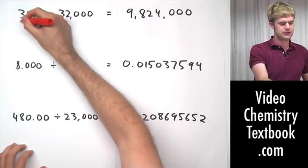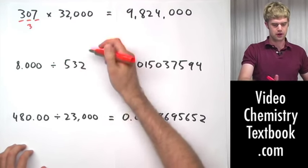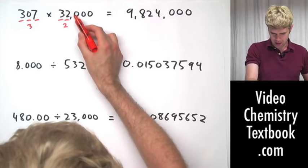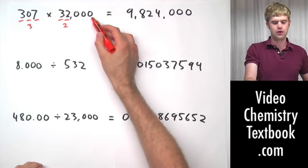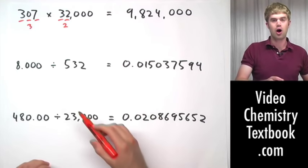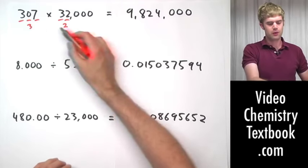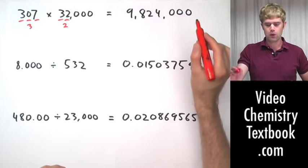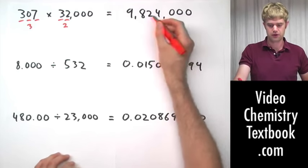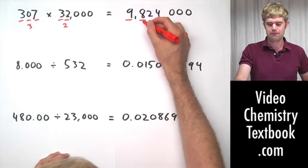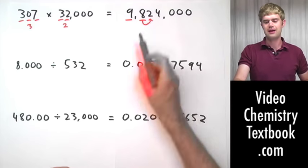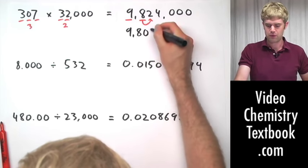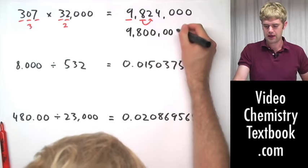307 here has three significant figures because of this sandwiched zero, and 32,000 has two significant figures because zeros to the right of significant figures when the number doesn't have a decimal point are not considered significant. So that means that when we multiply these together, here is the answer that our calculator spits out. We want to round it to two significant figures. So we'll keep the nine, we'll keep the eight, look next door to the eight whether to round up or down — we keep it the same. So we keep the nine, we keep the eight, and we fill everything else in with zeros.